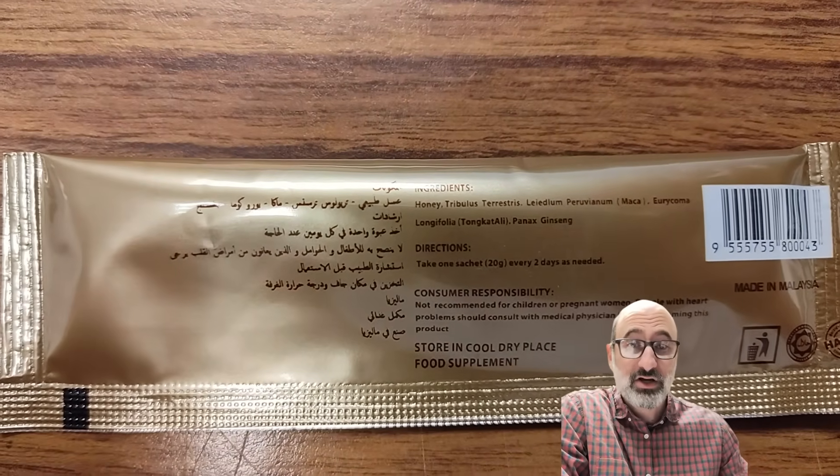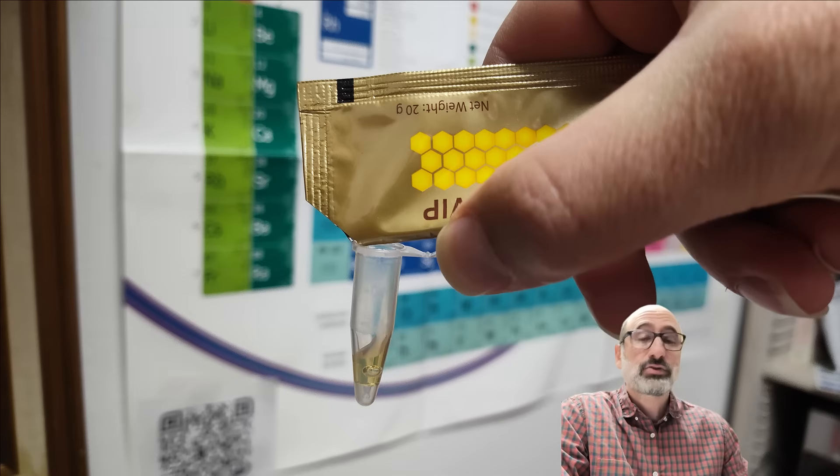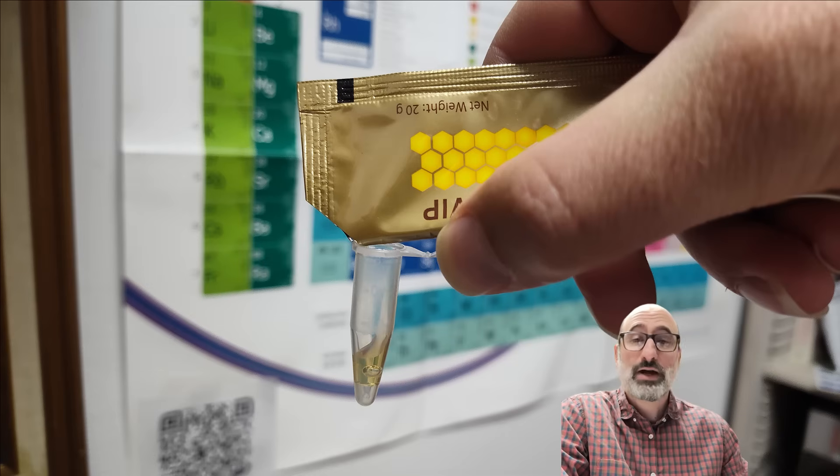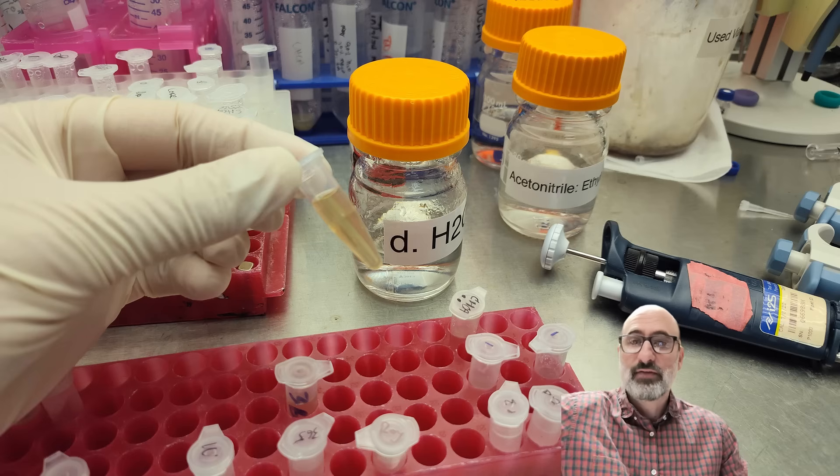Now, we're going to do another piece on the tongkat ali and potentially the testosterone effects from this tongkat ali. Anyways, we diluted this guy out, and we're going to put it onto the LC-MS. So this is really simple. We're not going to lose anything. We're not pelleting anything out. We're just taking the honey directly out of the packet.